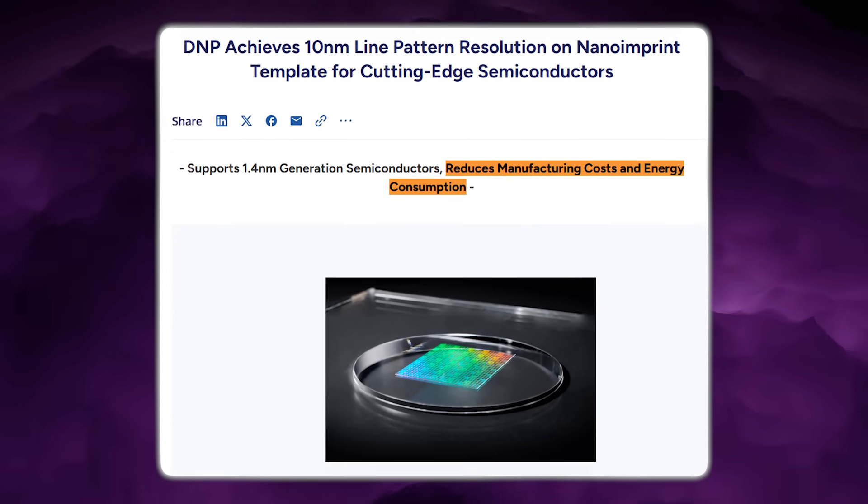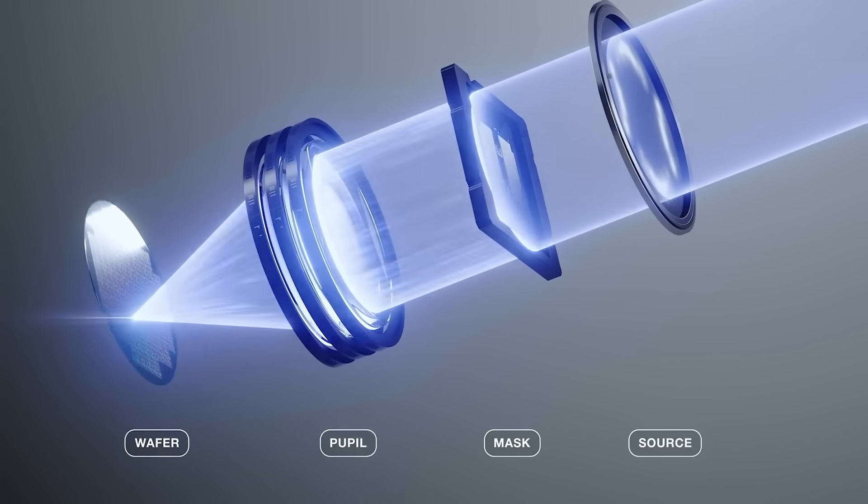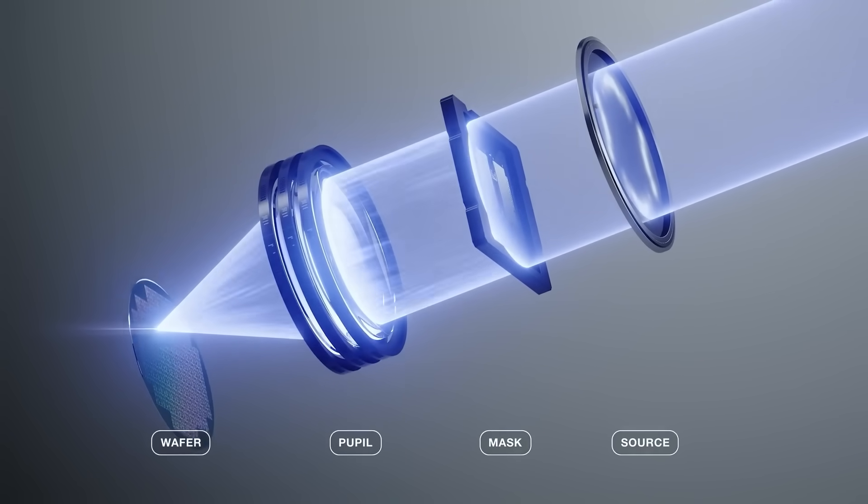And the most disruptive part of this isn't the resolution, it's the energy. According to DNP and broader industry comparisons, nano-imprint lithography can reduce energy consumption in the lithography step to roughly one-tenth of current mainstream approaches, including EUV.